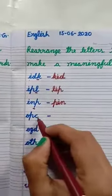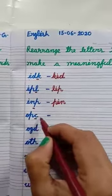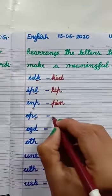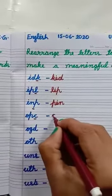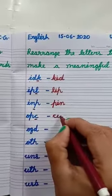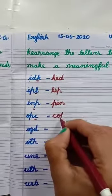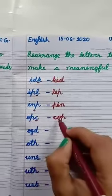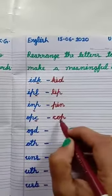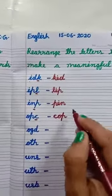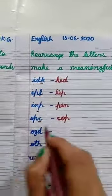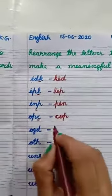The letters are O, P, C. First, I have written C, then O, then P. C, O, P — Cop. Cop is a meaningful word.